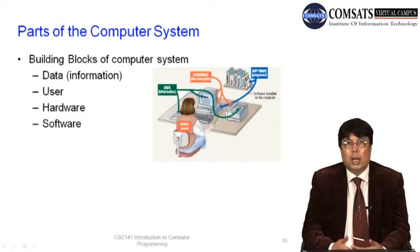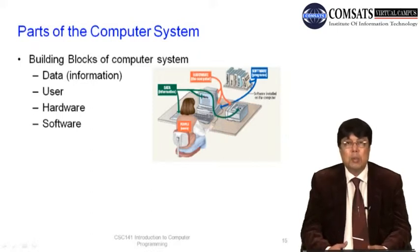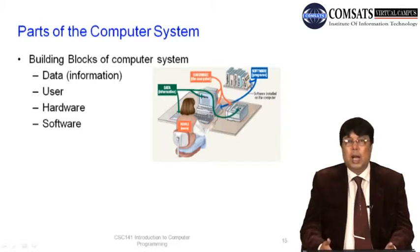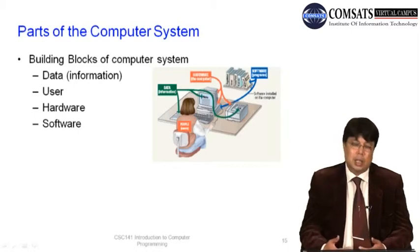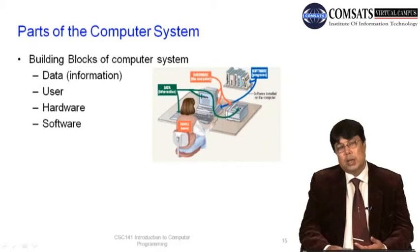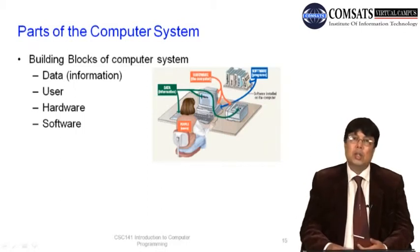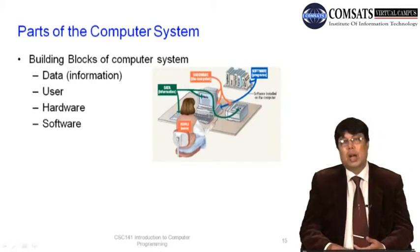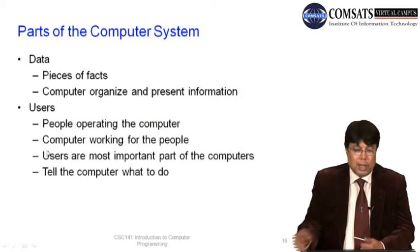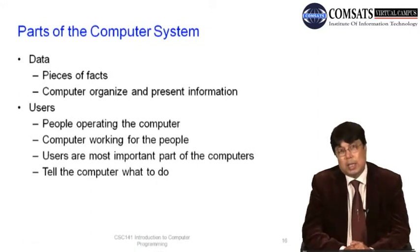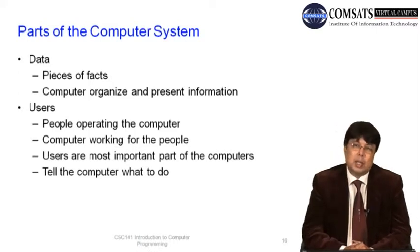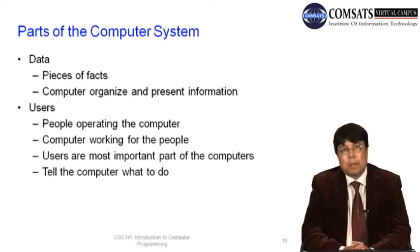A computer system has several building blocks: data, users, hardware, and software. Data is a piece of fact, and computers organize and present data as information. Users are the persons who operate the computer and for whom the computer carries out tasks — they tell the computer what to do and are the most important part, driving computers to become faster and more capable.